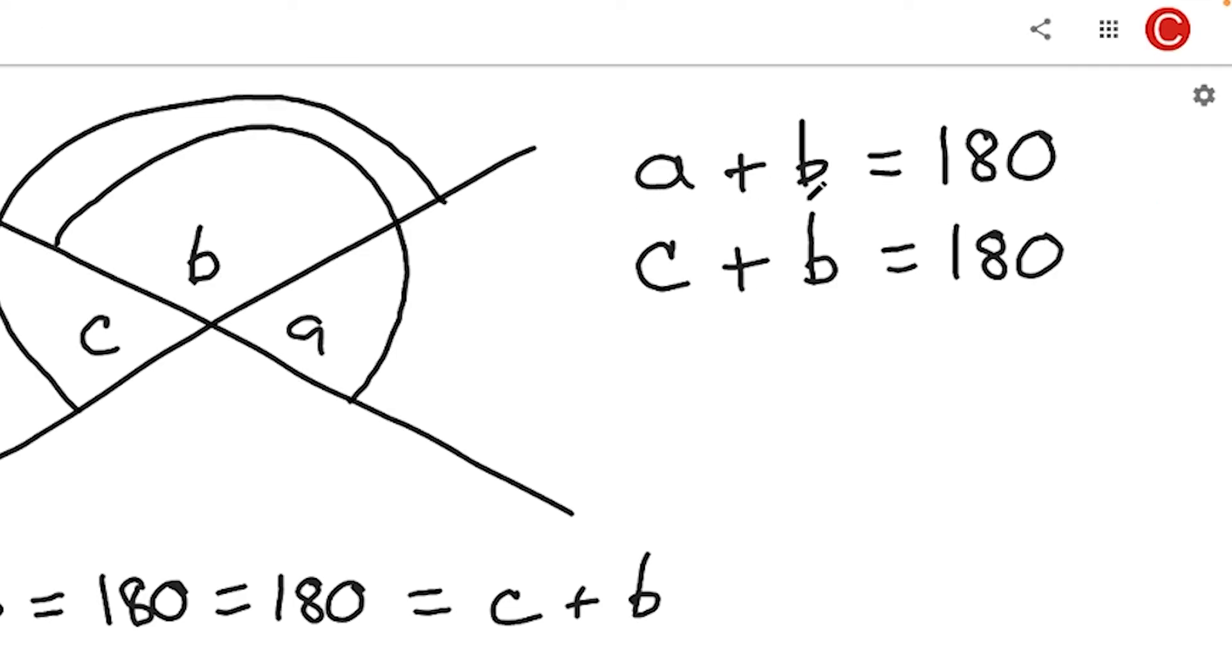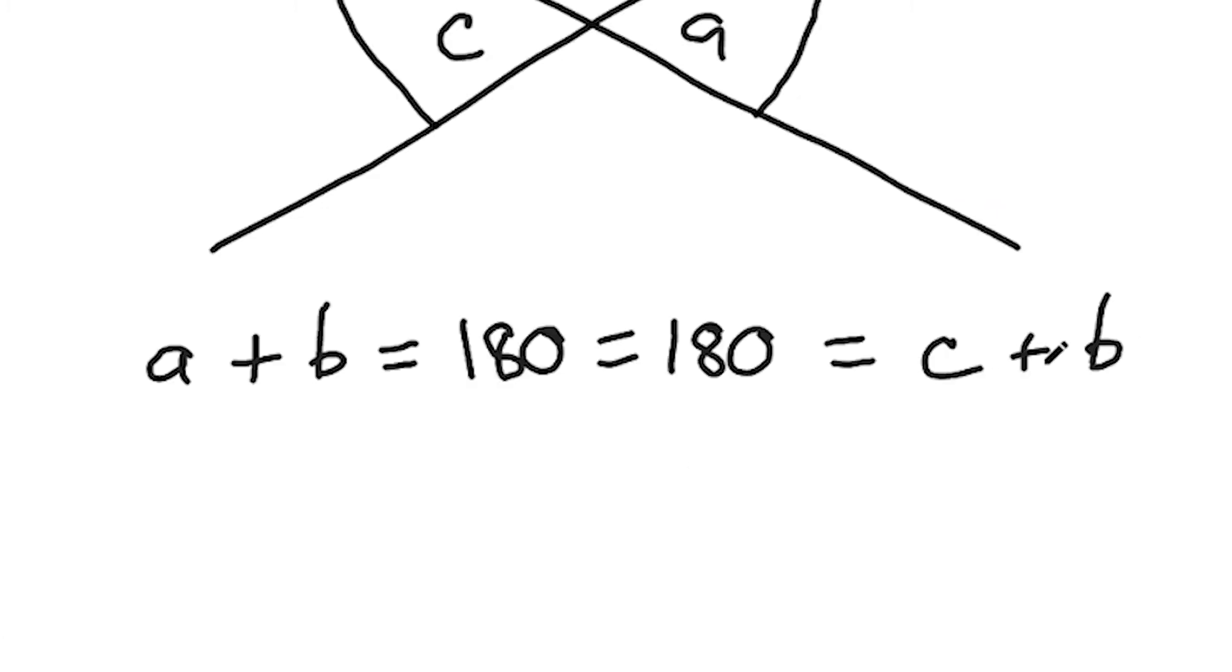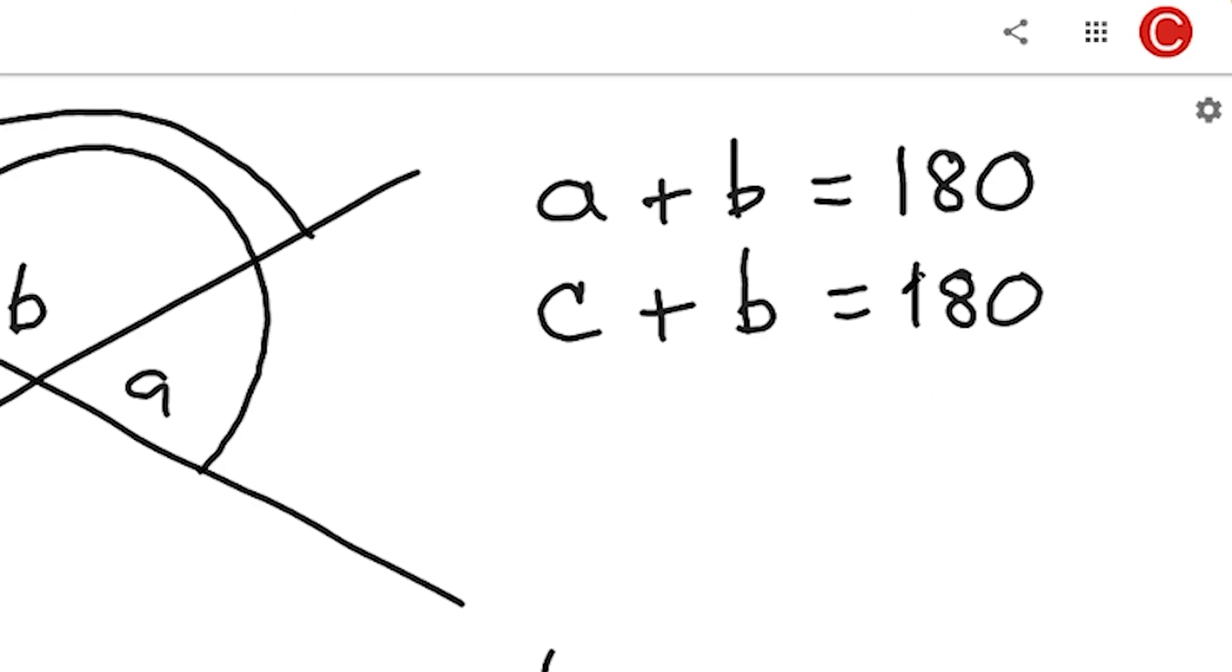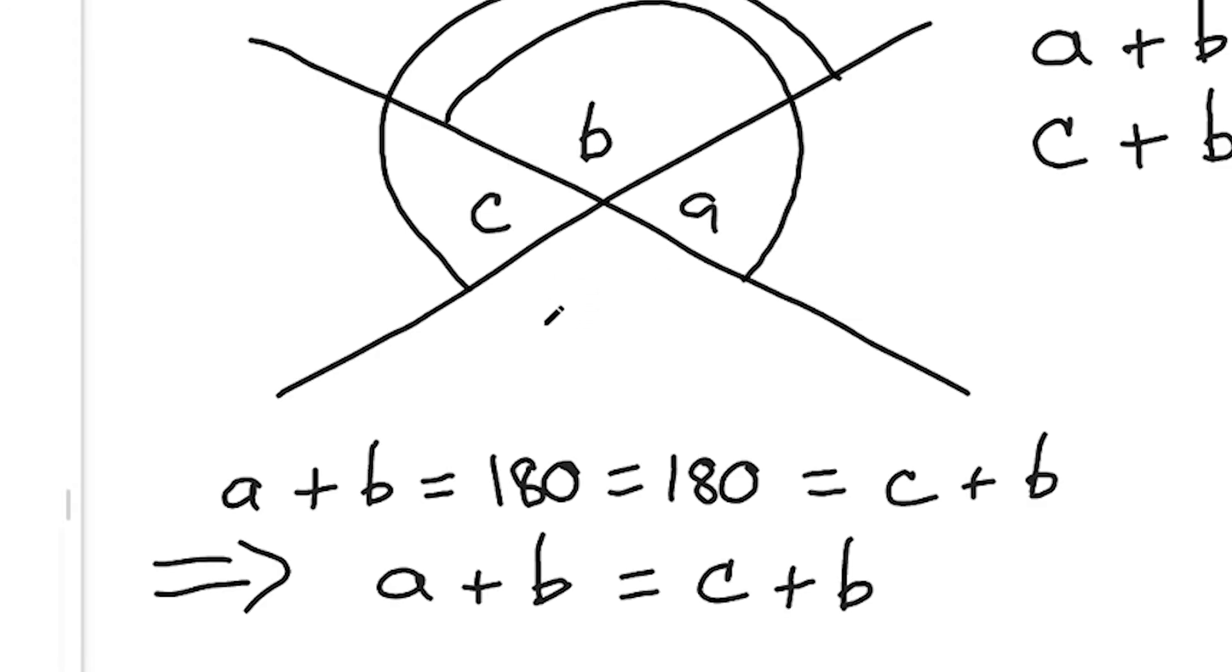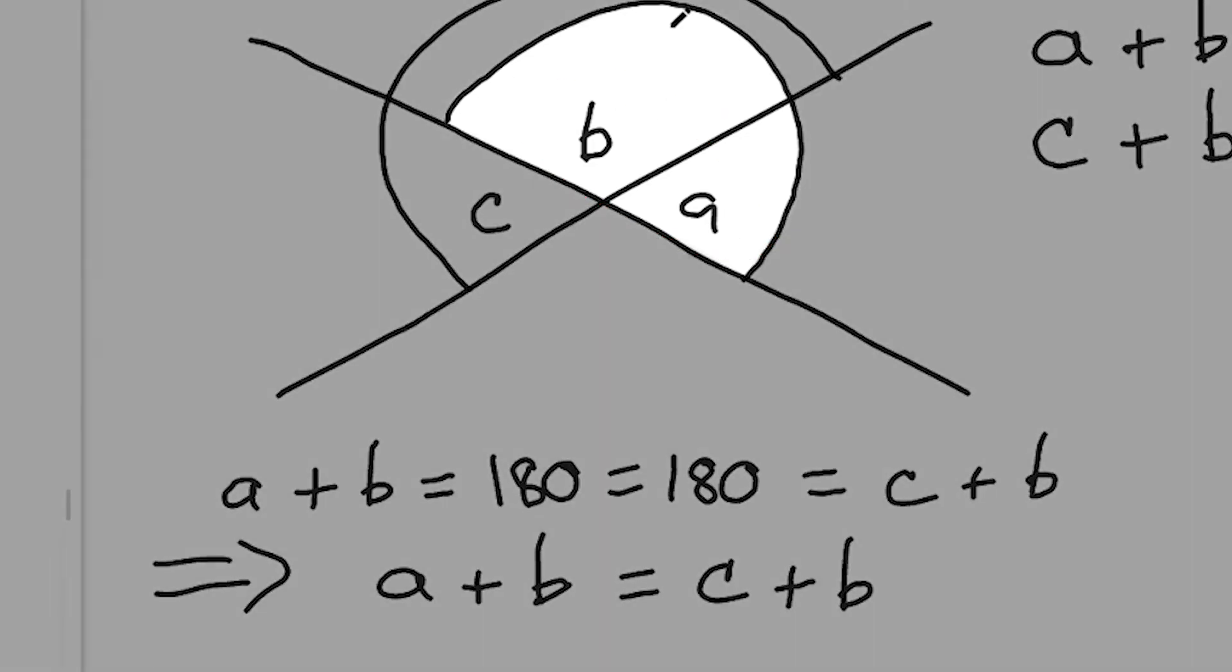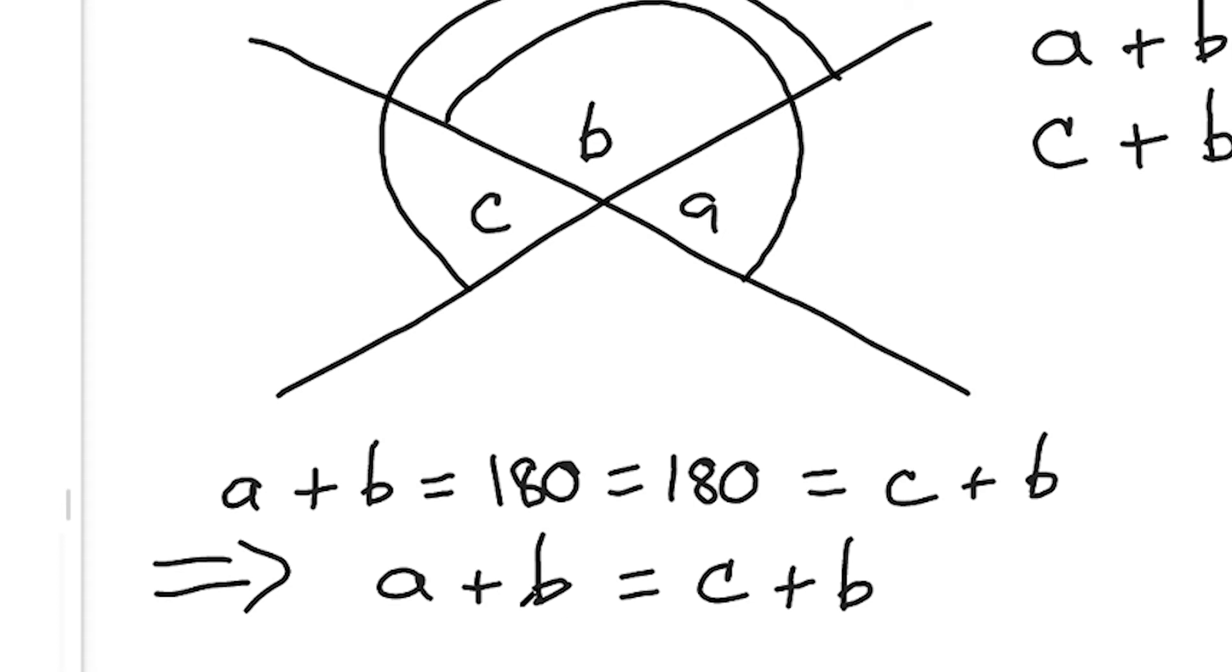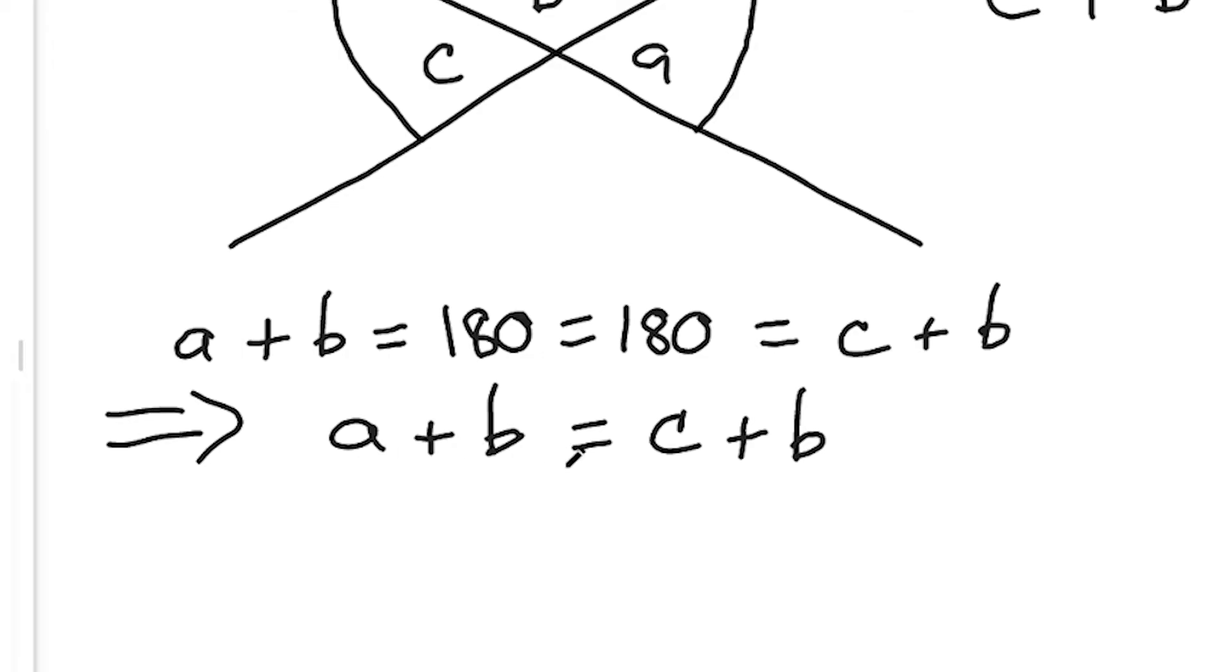So, if our sum here is equal to something, and then a different sum is equal to that same thing, that means that our two different sums are equal to each other. Because they're both equal to the same third thing. We can write this, then, as A plus B equals C plus B. And in our visualization here, all this is saying is we're representing that the sum of these angles, A plus B, is a straight line, as in half a circle. And then, the sum of these two angles, C plus B, is also half a circle, a straight line. So, these two sums are equal.